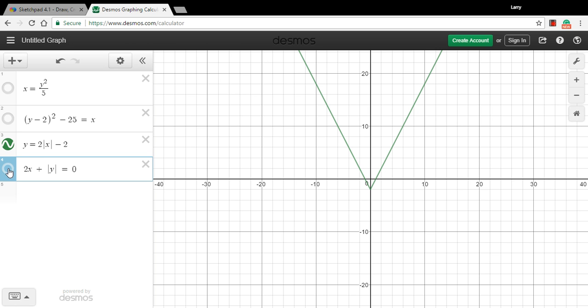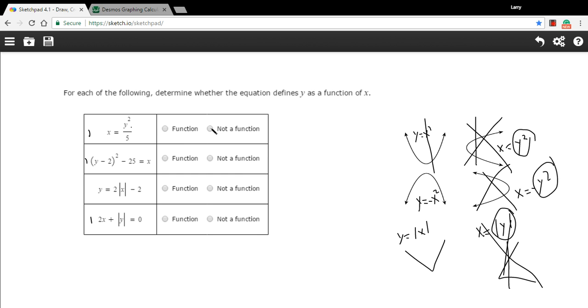And two x plus the absolute value of y, we get this sideways V shape, not going to pass the vertical line test, not a function. So my suspicions were correct. We got not a function, not a function, function, and not a function. So hope that helps.